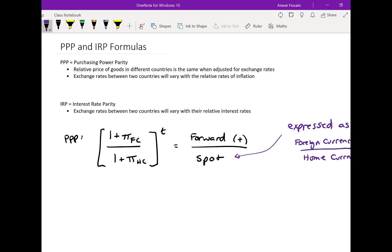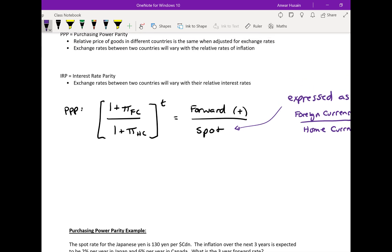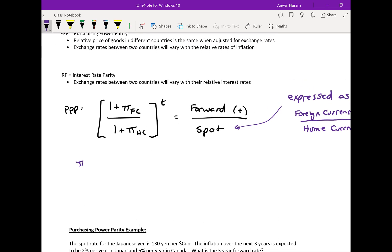For the rest of the variables, we can say that π_FC is equal to the inflation in the foreign country - that's the annual rate of inflation. And then π_HC is the inflation rate in the home country. And then t is the number of years in the future.